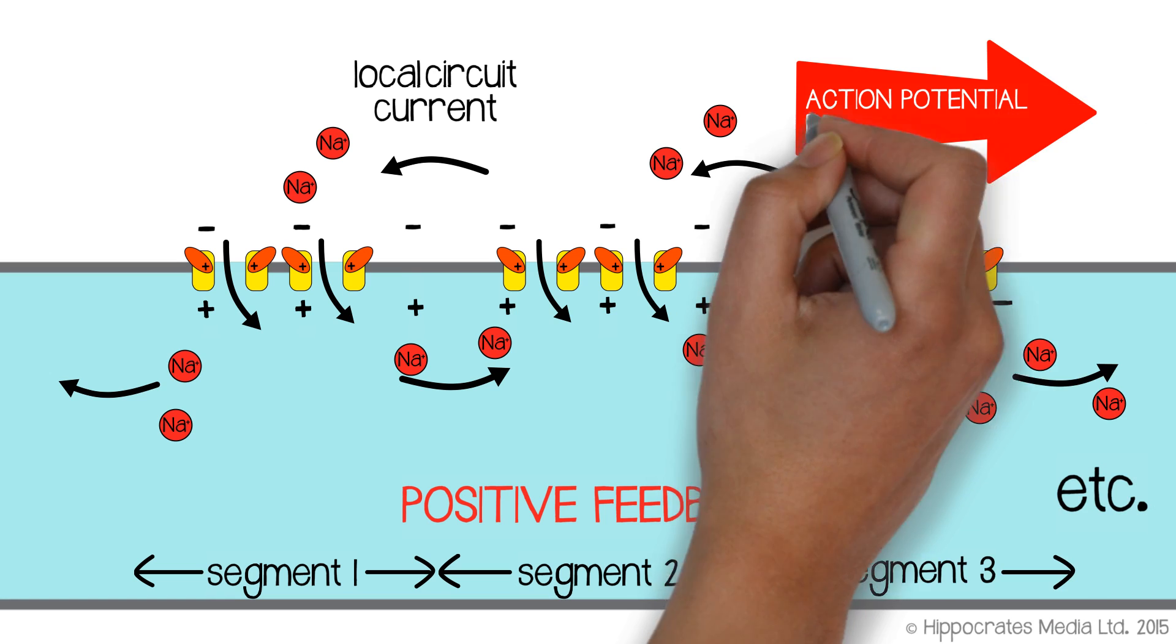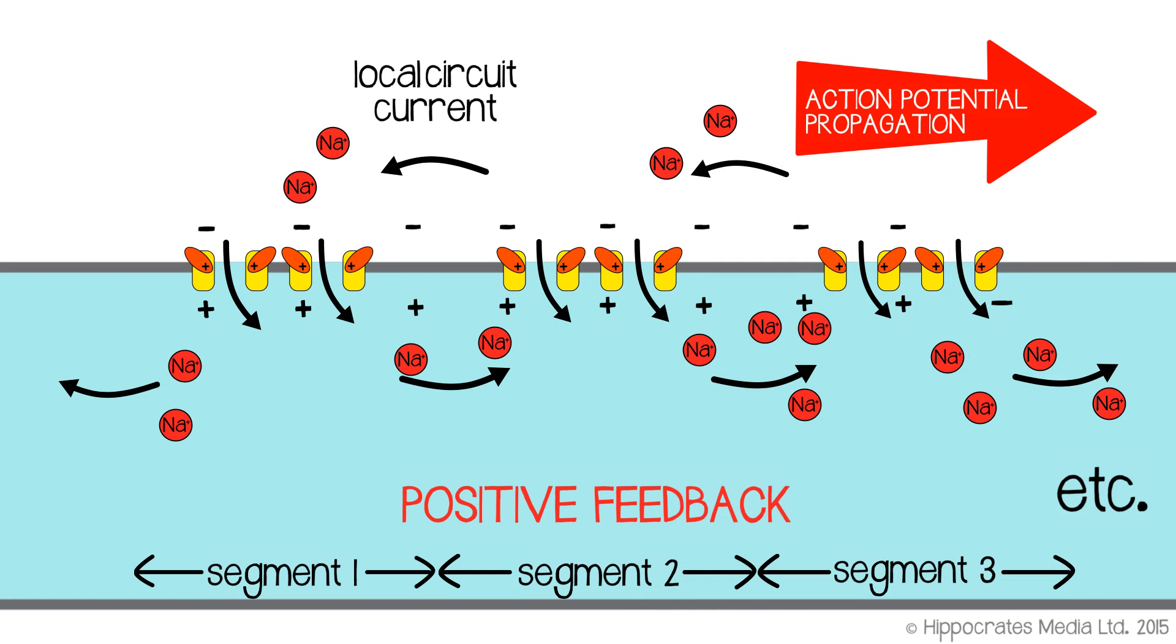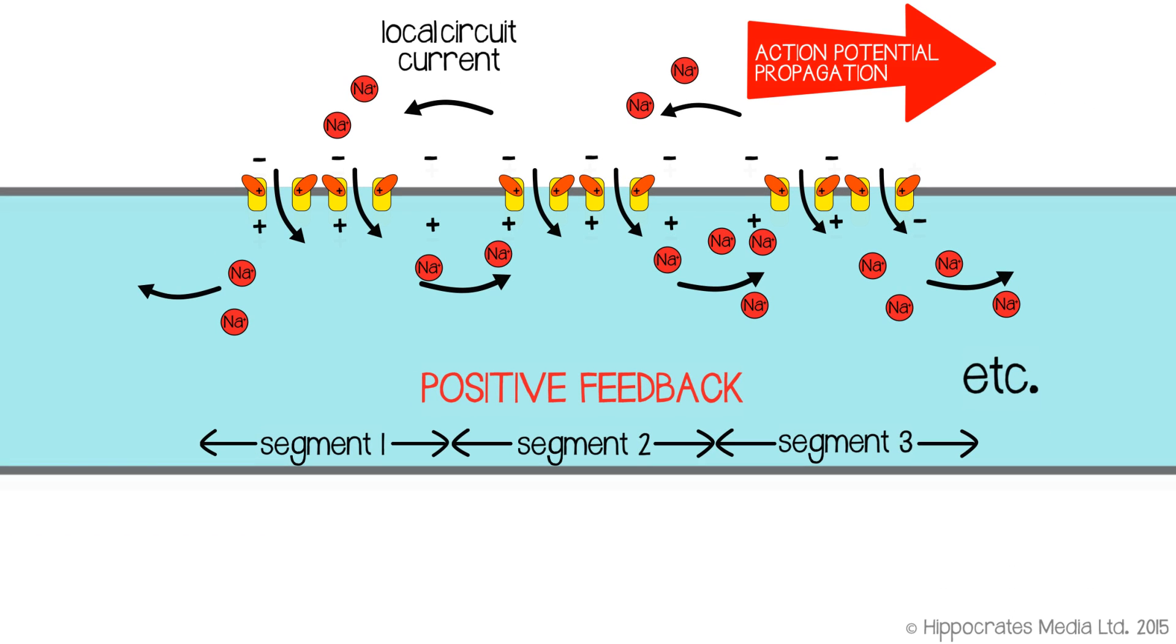As a result, the action potential propagates all the way along the axon. Some people liken this to lighting a fuse on a stick of dynamite. You light the fuse in one position, and then the heat and the fire in that position will start to set off the next bit of fuse, and the next bit of fuse, and the next bit of fuse. As a result, the signal propagates all the way along. It's a similar thing in a nerve cell axon, and that gives you your all-or-none propagation all the way to the end.